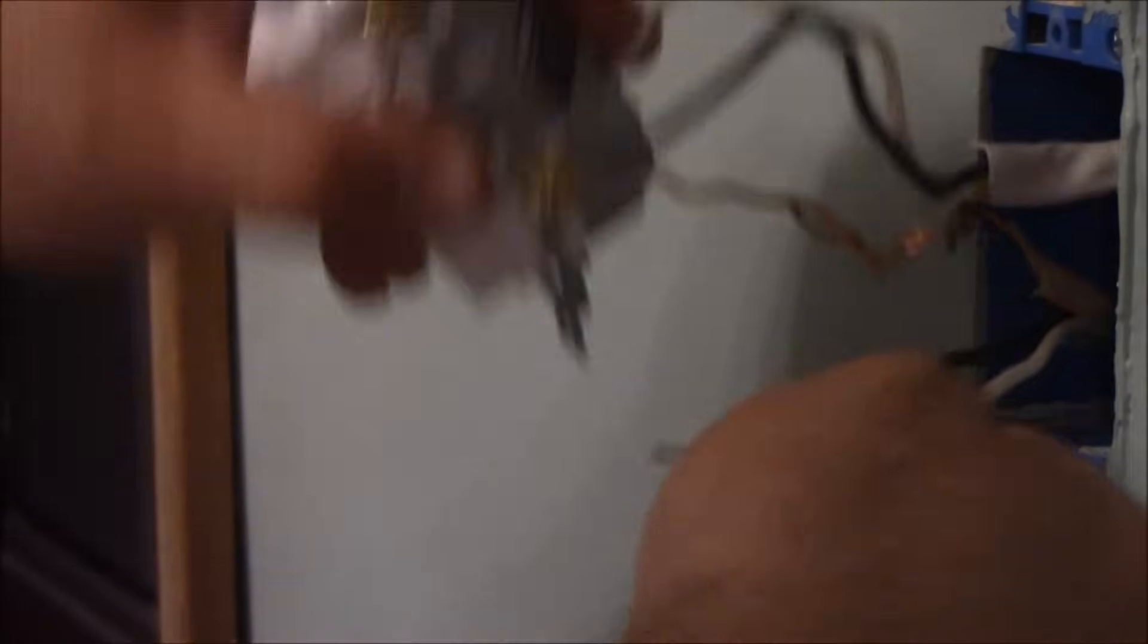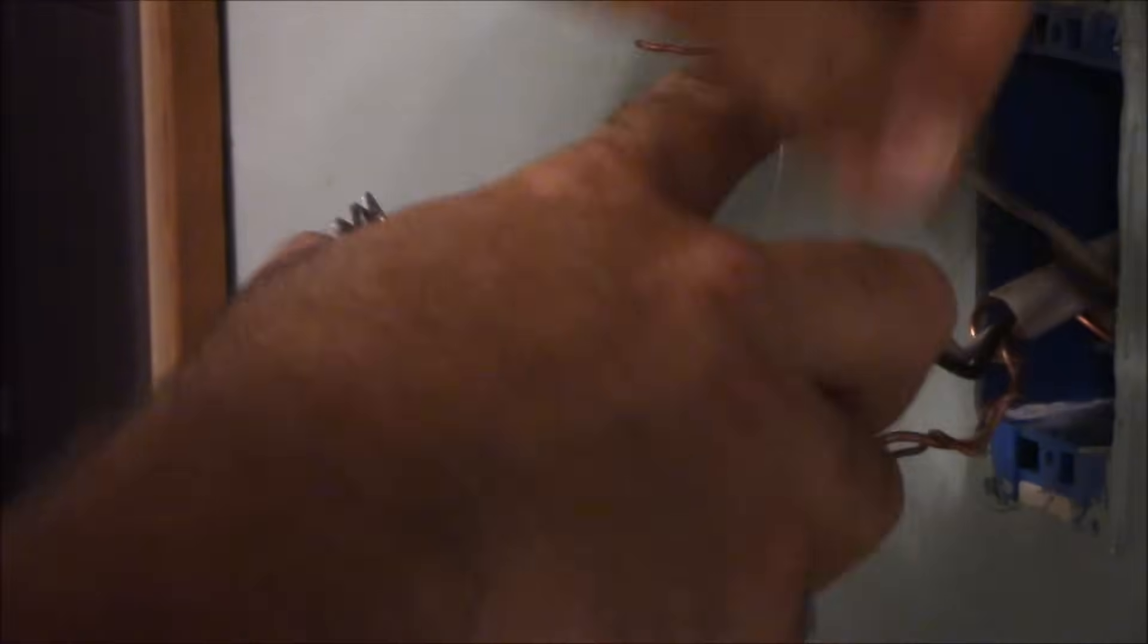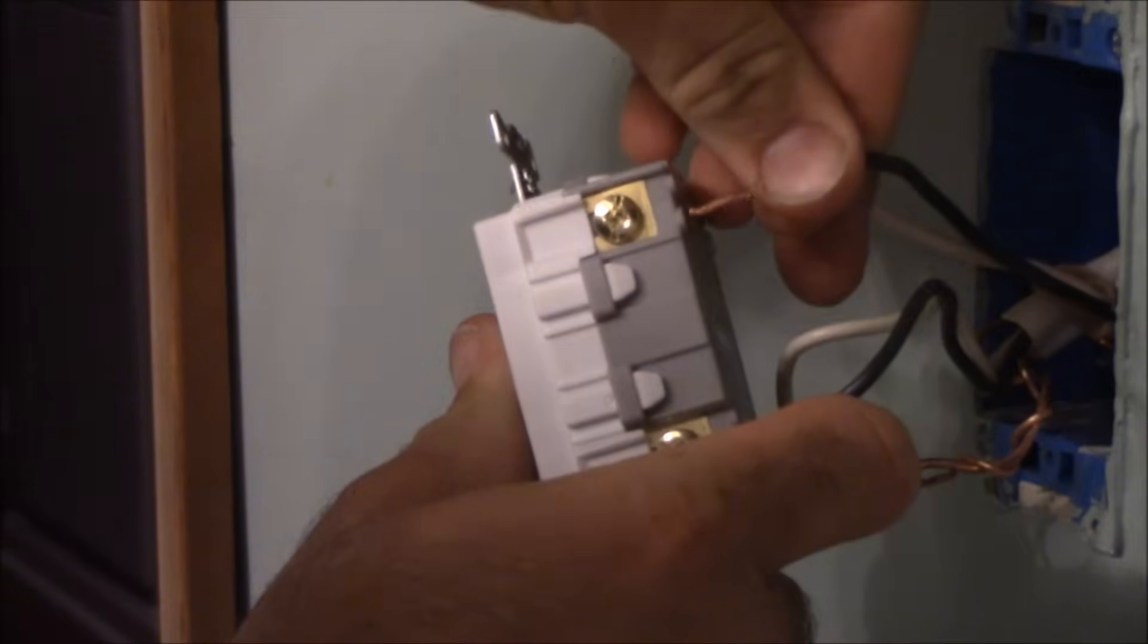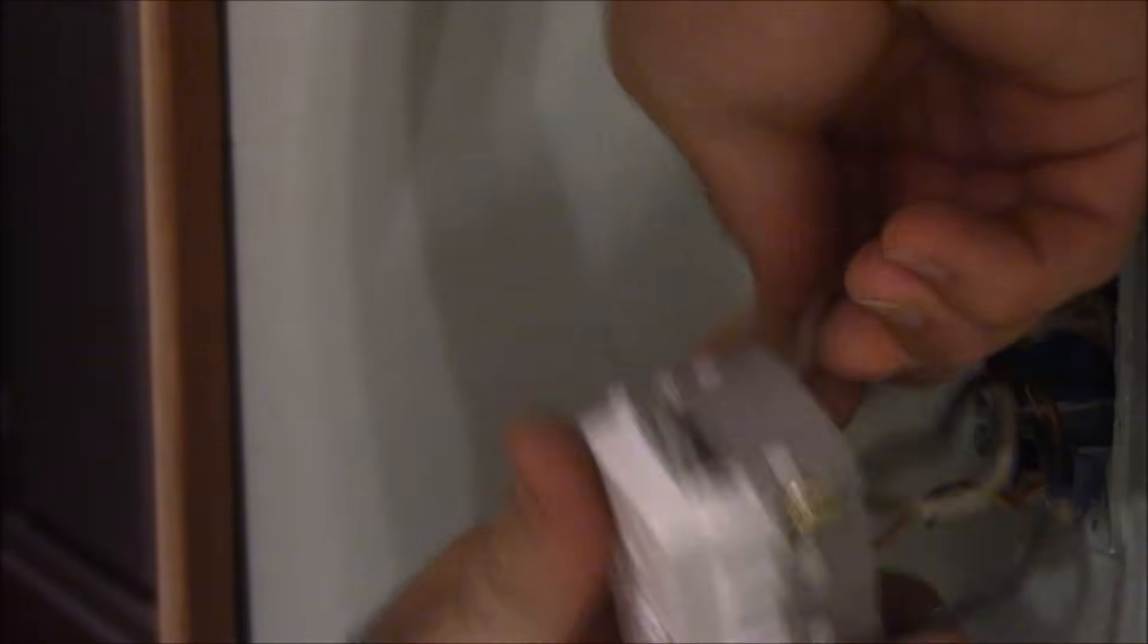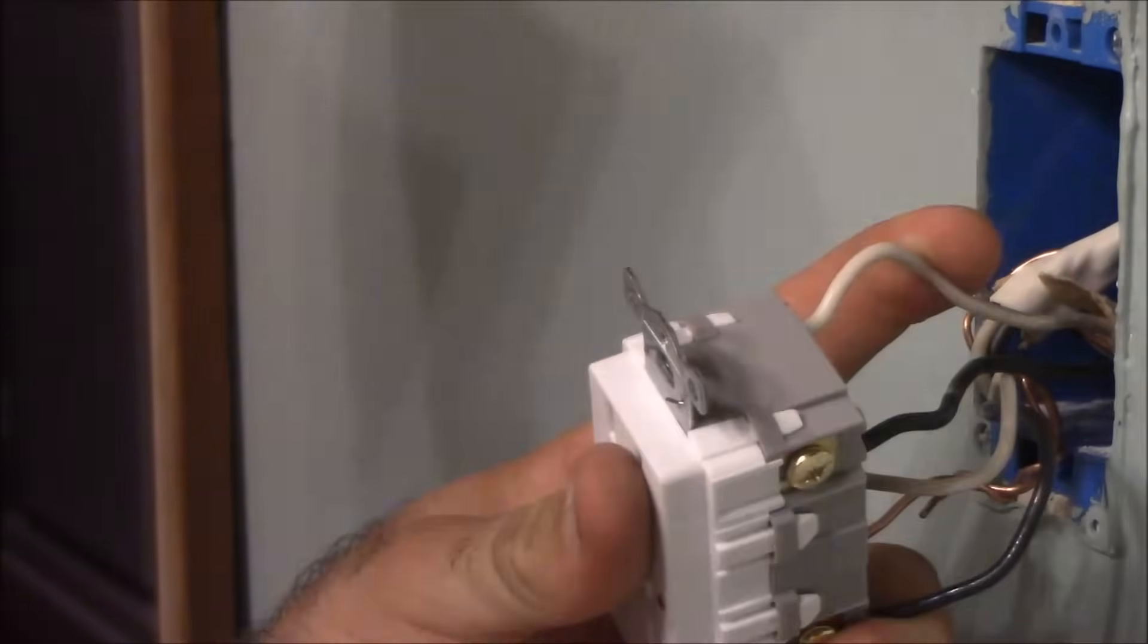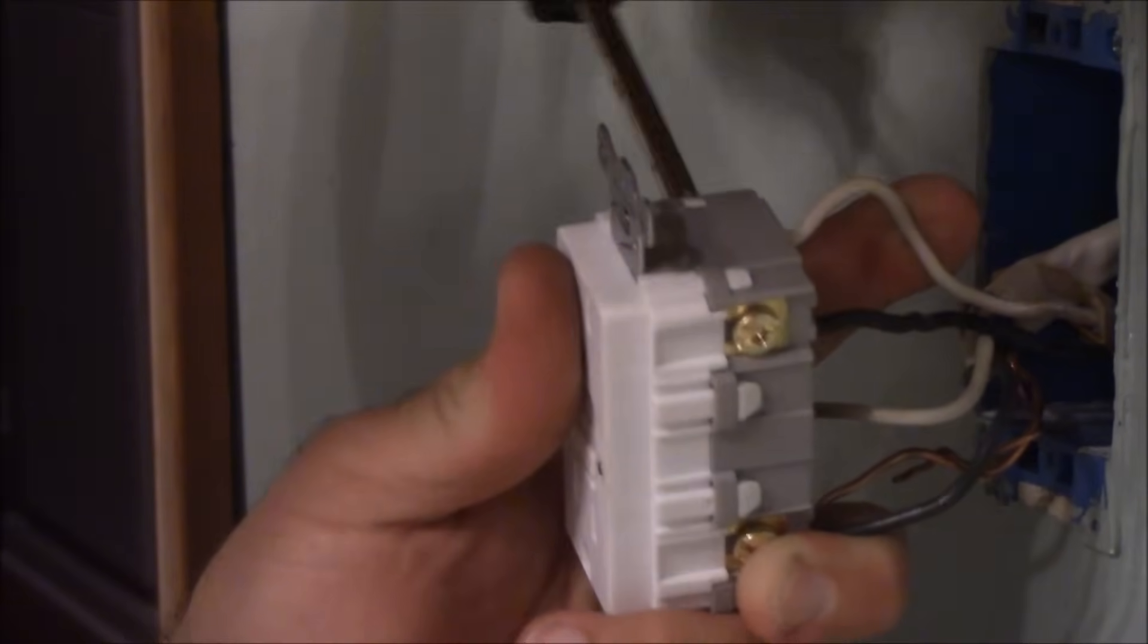Now you're going to do the same thing with your load side. This is the side that's going to be feeding your other receptacle. It's labeled on the back here which side the hot wire and which side the white wire goes on. Your hot wire always goes on the brass side, and your white wire always goes on the silver side.